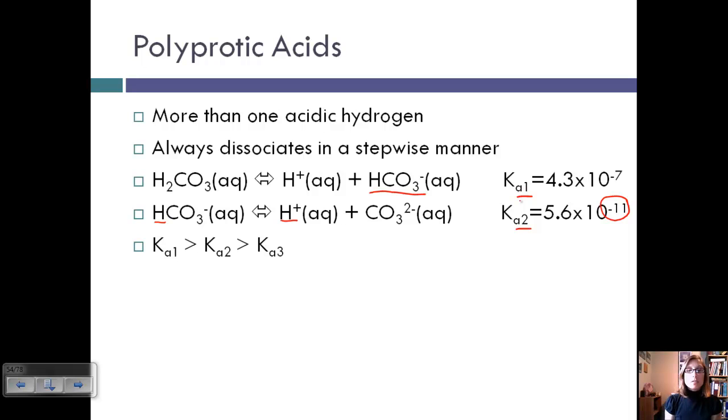So in general, Ka1 is always going to be greater than Ka2, and if we have a third step, Ka2 is going to be greater than that Ka value. So the acid in each step is going to be a weaker acid.